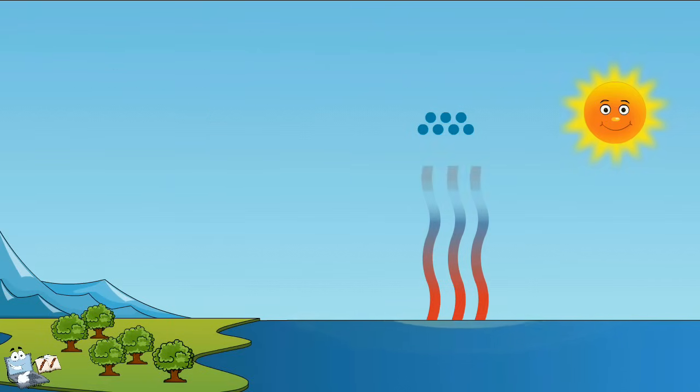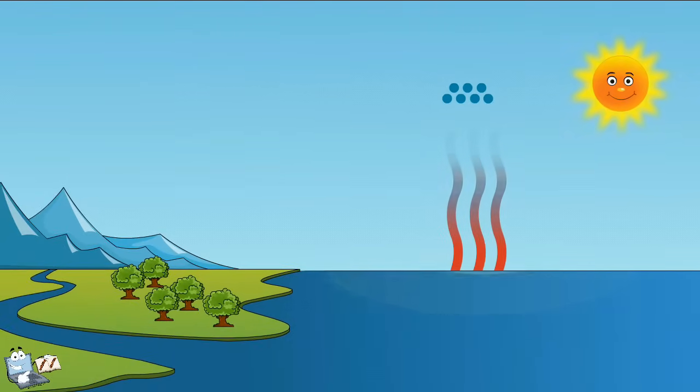Clouds are made up of tiny water droplets. So when condensation occurs in the sky, clouds form and grow. Let's see it from a closer perspective.